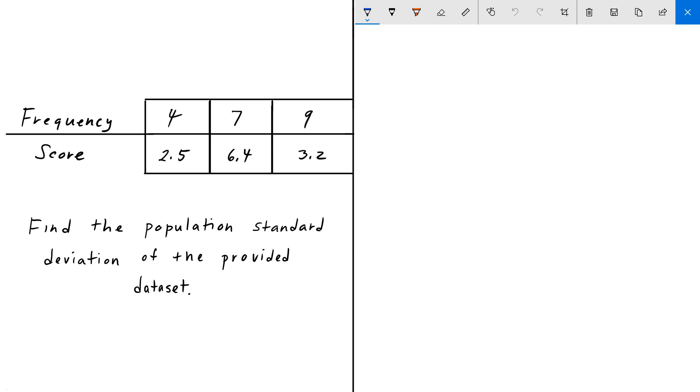Hey everyone, welcome back to Engineering Education. For this next problem we have a statistics problem. We're given the following data set: three different scores, 2.5, 6.4, and 3.2, and they occur with the frequency 4, 7, and 9 respectively.